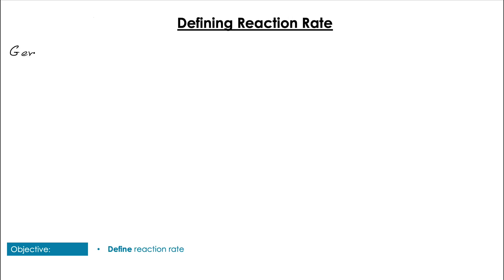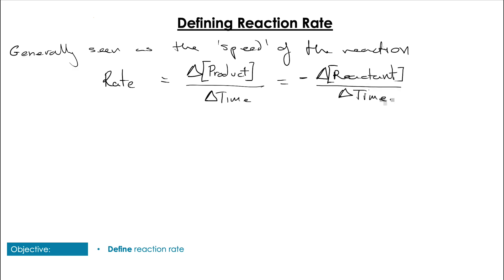Now we want to build up a definition of reaction rate. Generally, we understand the reaction rate to be the speed of the reaction. However, we want to be a bit more specific than that. The rate is given by the change in the concentration of the products divided by the change in time. This can also be expressed as the negative of the change in concentration of the reactants divided by the change in time, because the rate of reaction will always be positive.